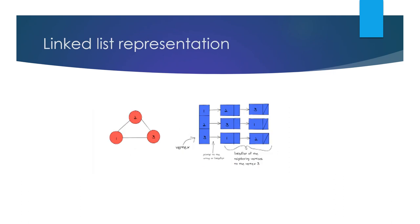Next is linked list representation. Here is a graph with vertices 1, 2, and 3. Vertex 1 is connected to two nodes, 2 and 3. Vertex 2 is connected with vertices 3 and 1, so they are represented in the nodes. The last vertex 3 is connected with vertices 2 and 1, represented in the nodes. So this is how a graph is represented using a linked list. This concludes today's class. Thank you.